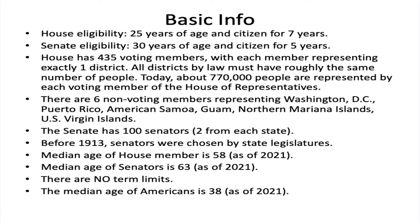In addition to 435 voting members, there are six non-voting members representing Washington D.C., Puerto Rico, American Samoa, Guam, Northern Mariana Islands, and U.S. Virgin Islands. The Senate has 100 senators. The reason is that the Constitution states each state is to have exactly two senators, and there are currently 50 states, so 50 times 2 equals 100.